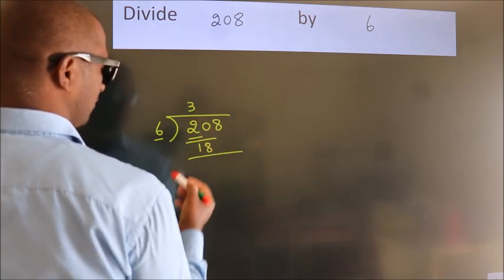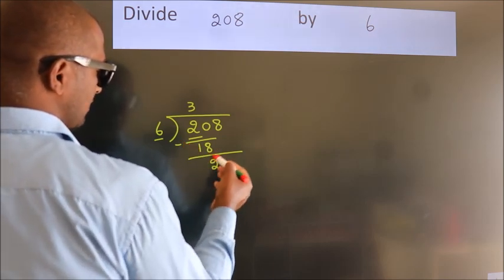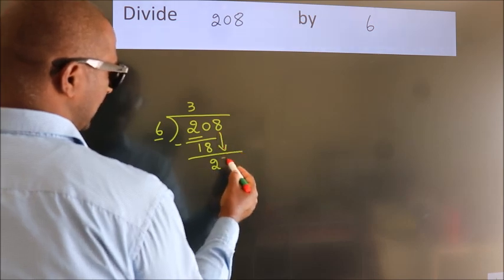Now we should subtract. We get 2. After this, bring down the next number. So, 8 down. So, 28.